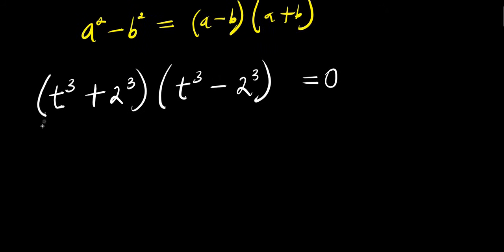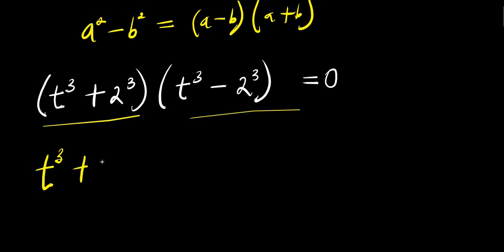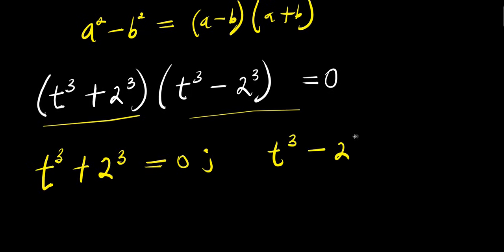Right now we equate each of them to zero: t power 3 plus 2 power 3 equals zero, and t power 3 minus 2 power 3 equals zero.